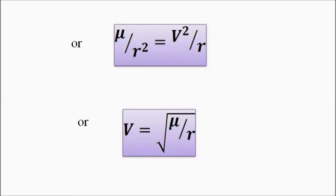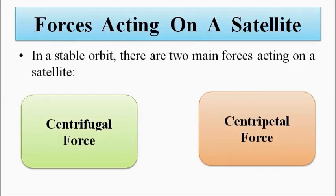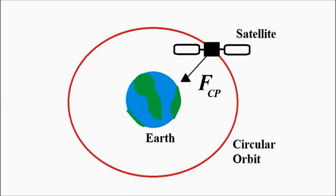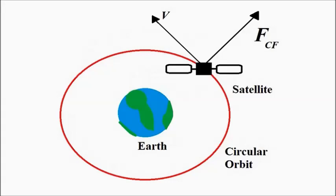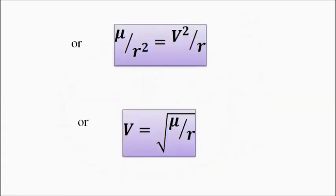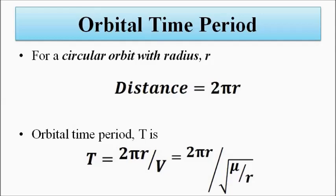So here we have discussed basic concepts related to the forces acting on a satellite — the centripetal and centrifugal forces — and how they work in equal magnitudes and opposite directions to keep a satellite stable in a particular orbit. We also discussed the mathematical expressions for the velocity of the satellite and the orbital time period for both circular and elliptical orbits. I hope you liked this video. Please subscribe to Engineering Tutorial for more videos related to engineering, science, and technology. Have a great day, thank you very much.